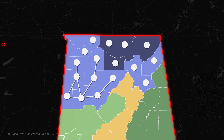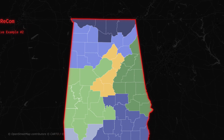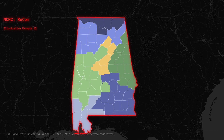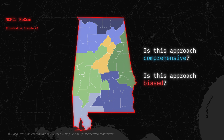So we take adjacent precincts, we merge them into something called a spanning tree, then we just have to break one connection — as long as it maintains population parity — to get two new districts. And we could apply this across the districts. The big problem with recombination is we need to start with an initial plan, so there's a chance we're kind of blind to some of the possibilities in the absence of that plan, or if that plan is on its own biased.